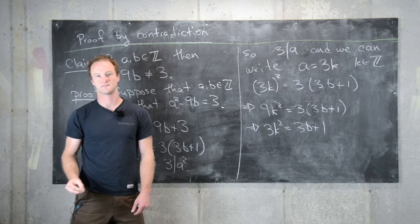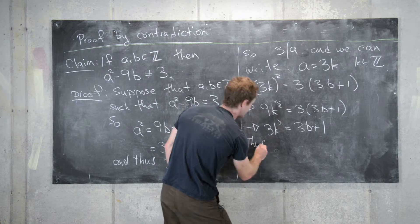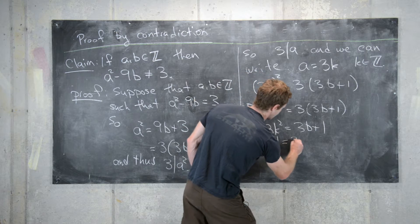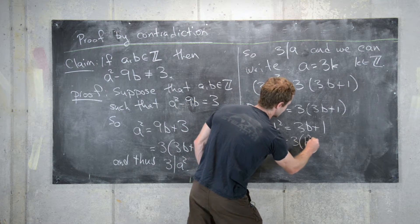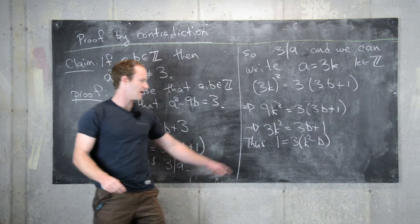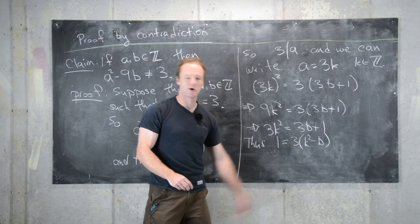And then finally, thus, that tells us that 1 equals 3 times k squared minus b. In other words, 1 is a multiple of 3.